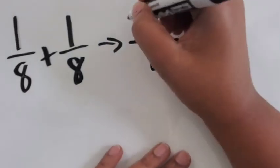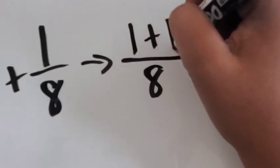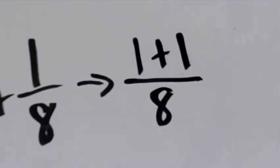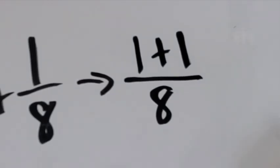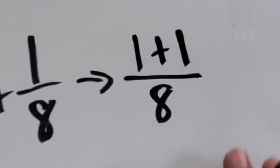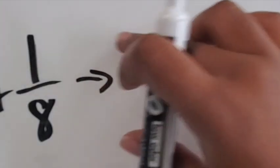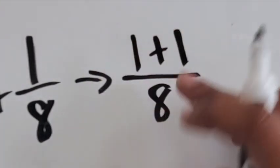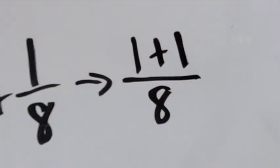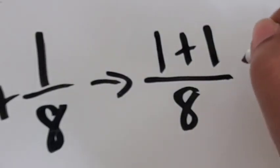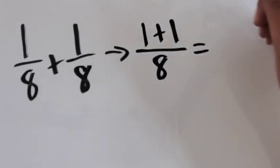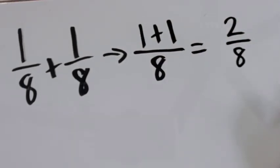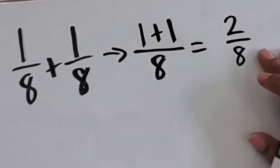So let's look at it like this, where we're combining those two numerators together. One way to remember, or when you're teaching others to remember that we do not add the denominator, is just to bring that denominator over and then rewrite those two numerators together. This step is not required — it's just another way to visualize adding those fractions together. One eighth plus one eighth is two eighths.